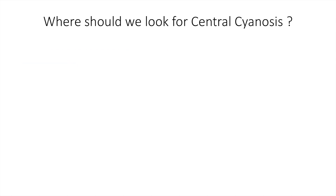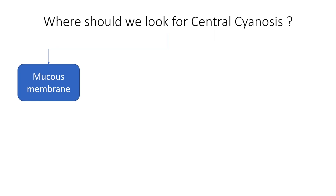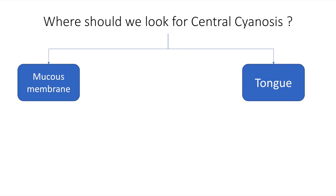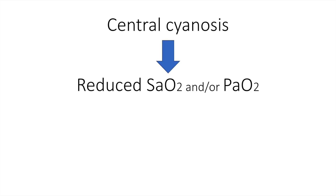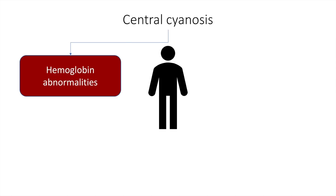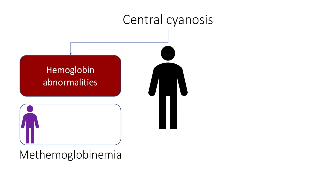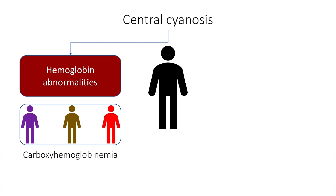On the contrary, we look for central cyanosis in the mucous membranes and the tongue. Central cyanosis results from a reduced arterial saturation or reduced partial pressure of oxygen. Central cyanosis may be due to hemoglobin abnormalities such as methemoglobinemia, sulfhemoglobinemia, and carboxyhemoglobinemia.